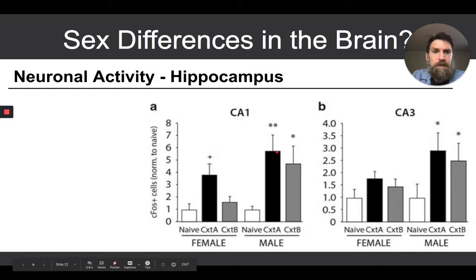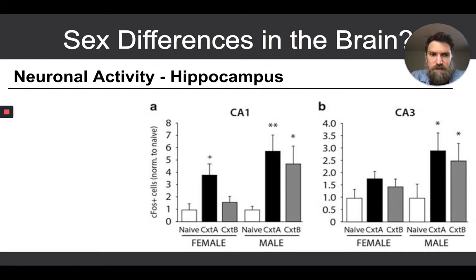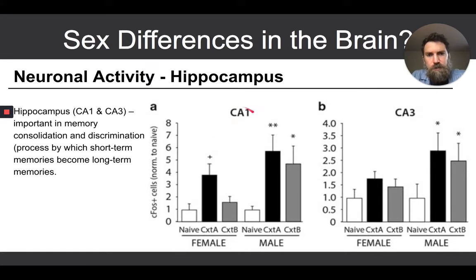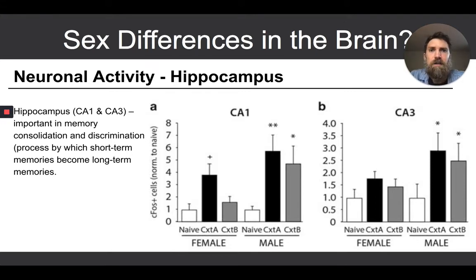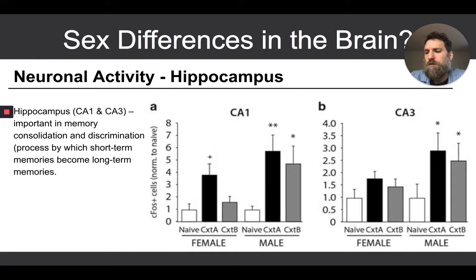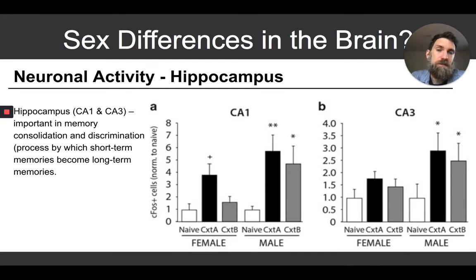That's what they did in this study — they took slices of the hippocampus to look for CFOS neural activity. CA1 and CA3 are two different parts of the hippocampus they examined. The hippocampus is an important section of the brain for learning and memory, specifically for consolidating memory — transforming new information from short-term memory into long-term memory.